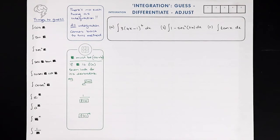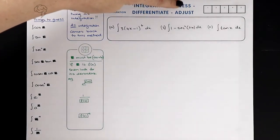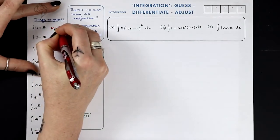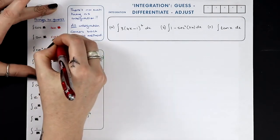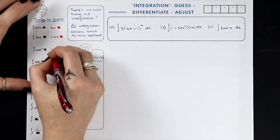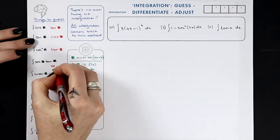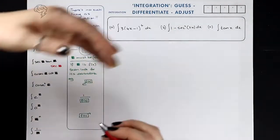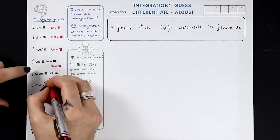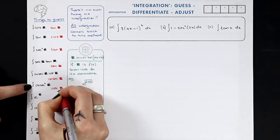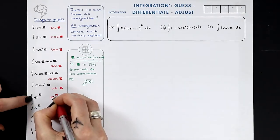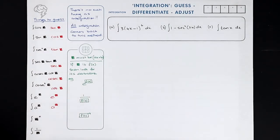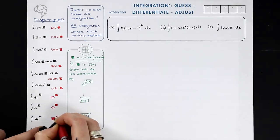Don't think of it as integration — think about what has been differentiated. There are only 10 things that we differentiate. The idea is that we're going to guess what got differentiated and then fiddle with it if we need to. What got differentiated here must have been sine. Cos differentiates to sine; tan differentiates to sec squared; sec differentiates to sec tan. What differentiates to cosec cot? Cosec. Derivative of cot is cosec squared. Derivative of e to the power of something is e to the power of something. Derivative of a to the power of something is a to the power of something.